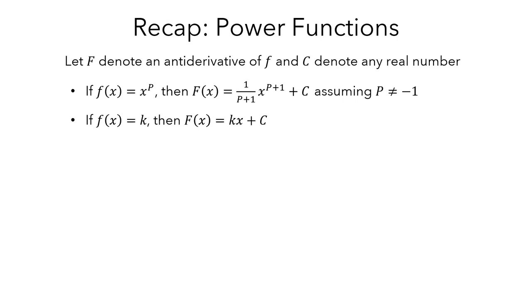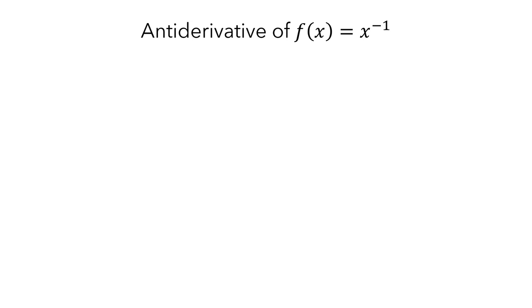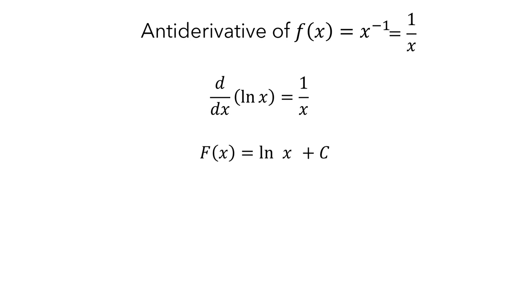What can we do to compute an antiderivative in this situation? Our goal is to find the antiderivative for x to the negative 1, which can also be written as 1 over x. You might recall that the derivative of natural log of x is 1 over x, so an antiderivative of 1 over x is natural log of x plus c.